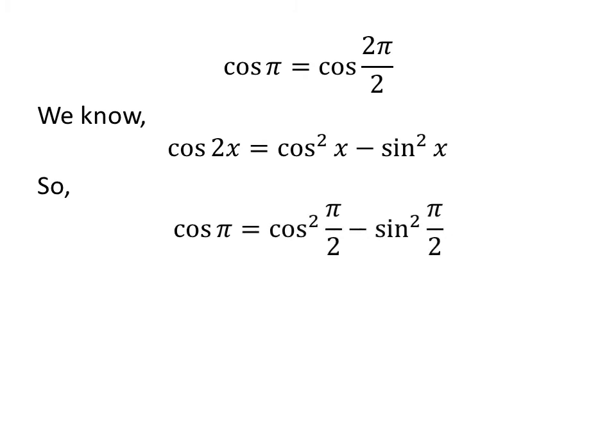Let us apply the above identity in the above expression of cosine of pi. So, cosine of pi is equal to square of cosine of half of pi minus square of sine of half of pi.